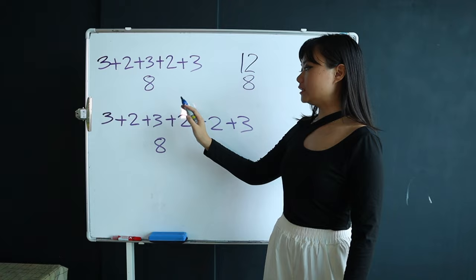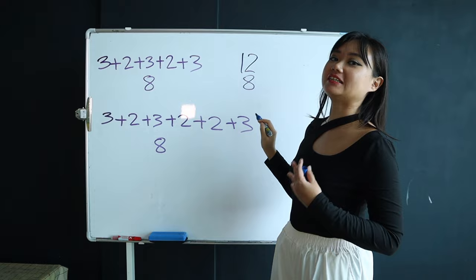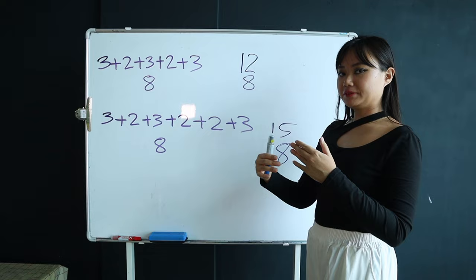In the max measure of Shifted, it goes to 3 plus 2 plus 3 plus 2 plus 2 plus 3, and it adds up to 15 eighths. At the break of Shifted, where it doesn't really change too much in time signatures, that's just a normal decision.